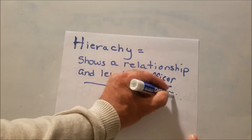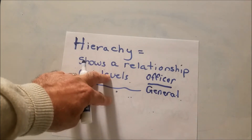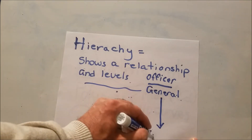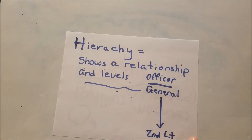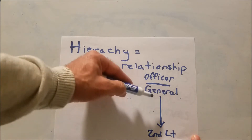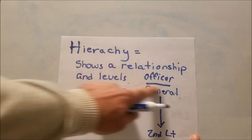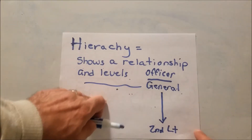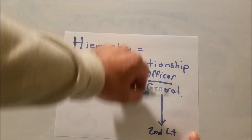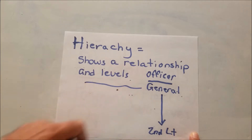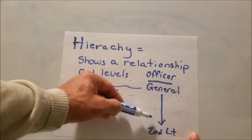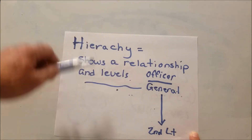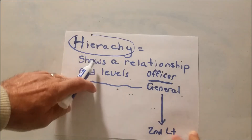There are different stars for a general — one, two, three, or four stars — and the four-star general is the highest. Going down the scale, from general to the lowest rank, a second lieutenant, they all have a relationship because they're all in the army. The hierarchy shows rank, and general is the highest while second lieutenant is the lowest.